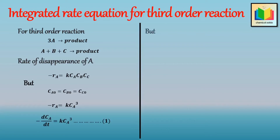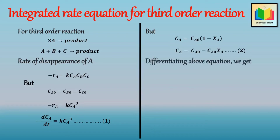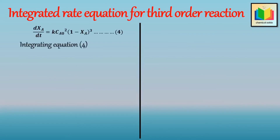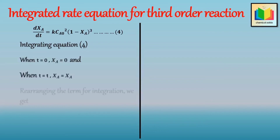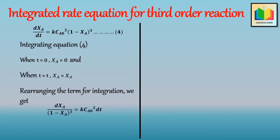As we know, concentration in terms of conversion is: CA = CA0(1 − XA), which can also be written as CA = CA0 − CA0·XA. Differentiating gives: dCA = −CA0 dXA. Substituting values of CA and dCA into equation one and rearranging, then integrating equation four within the limits — when t = 0, XA = 0, and when t = t, XA = XA — gives: dXA / (1 − XA)³ = k·CA0² dt.